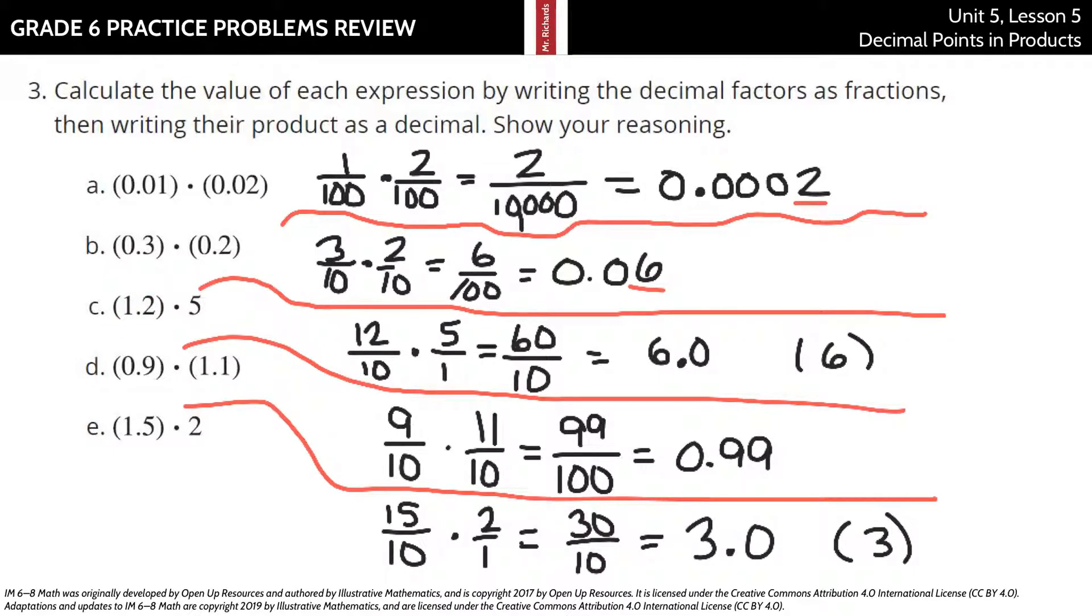Now, one and two-tenths is the same thing as twelve-tenths, if you think about it that way. It's twelve-tenths times five over one is sixty-tenths. Well, this is sixty-tenths, which is the same thing as six.